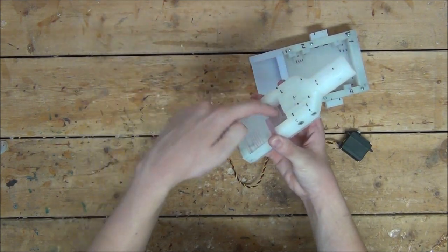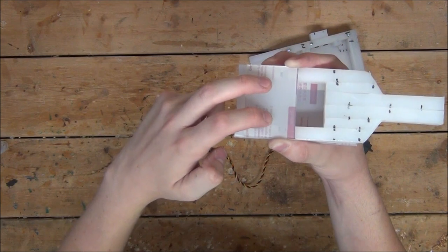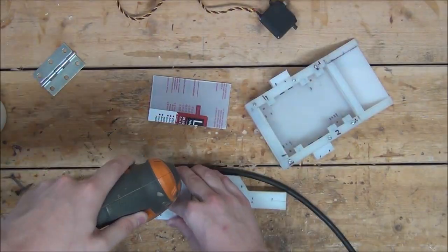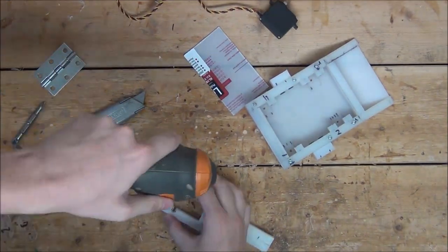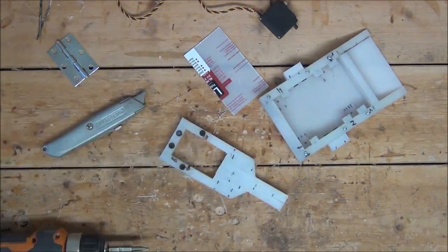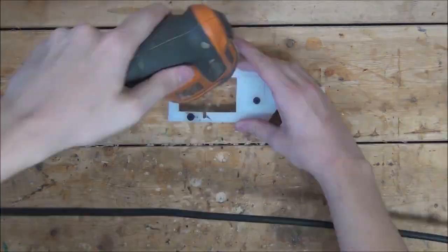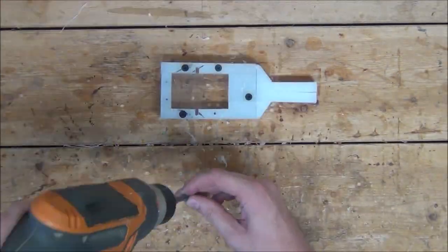That way, once again, we'll have room for the servo gear to poke through. I'm also going to mount the bottom piece about a quarter inch from the back, so we'll have room to add a hinge later. There we go.